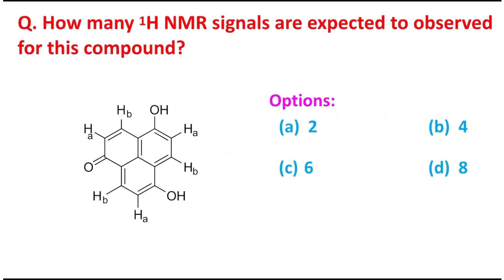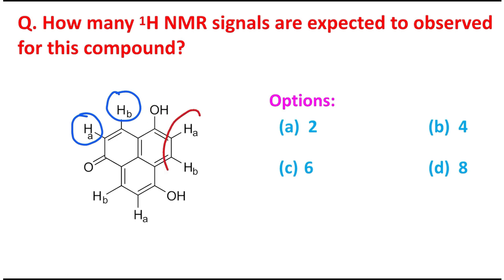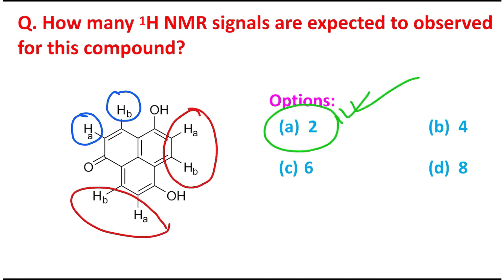More accurately, only HA and HB — these two types of protons — are observed. With respect to the other canonical form, the same HA and HB will give peaks in the same way. So overall we get peaks for two types of protons, and therefore option A — two signals — is the answer.